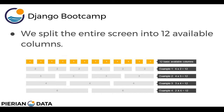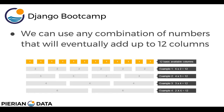The Bootstrap grid system has this fundamental idea. We'll split the entire screen into 12 available columns. You have these 12 basic available columns. Then you can use any combination of numbers that will eventually add up to 12 columns. On that second row, you see we have 6 by 2 columns. On example number 2, we see 4 by 3. Example number 3, you see 3 by 4. And then we see 2 by 6. So we can split up those columns in any way we want, and we can also split them up unevenly — 8 on one side and 4 on the other, or vice versa.